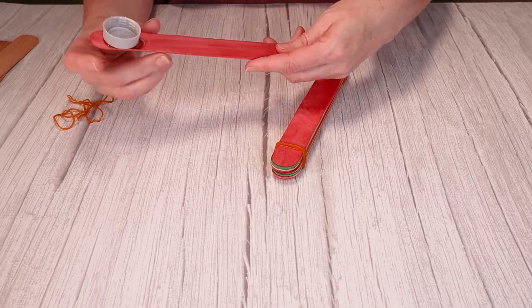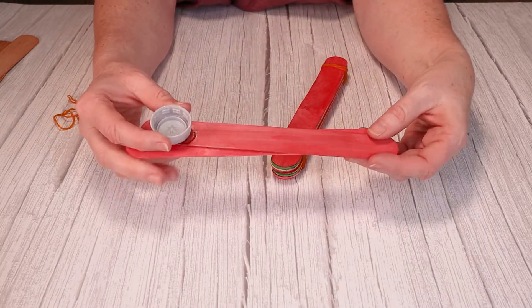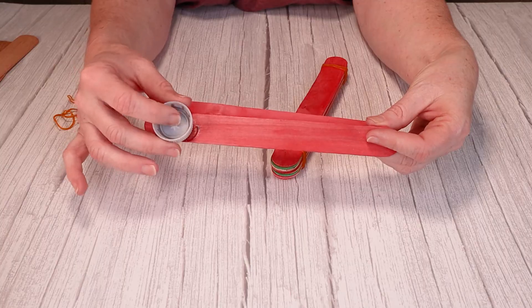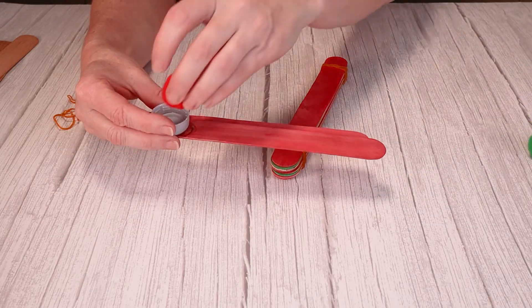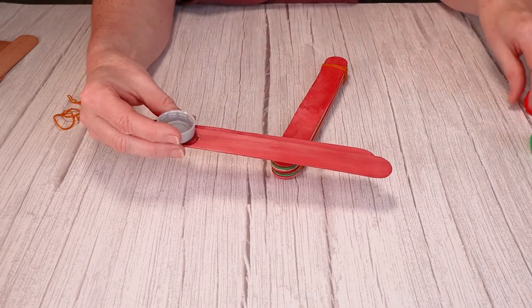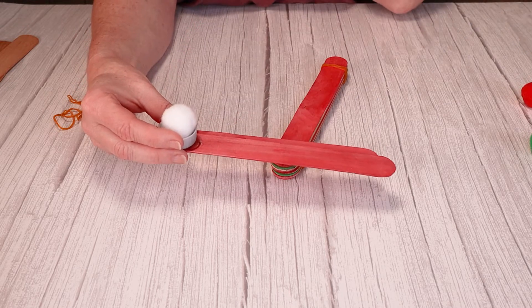Now we're going to make our lever. So like I said I've already glued on a bottle cap. This is what's going to hold our projectiles which is our little pom pom snowballs. Here I'll grab a white one. There we go. More like a snowball.